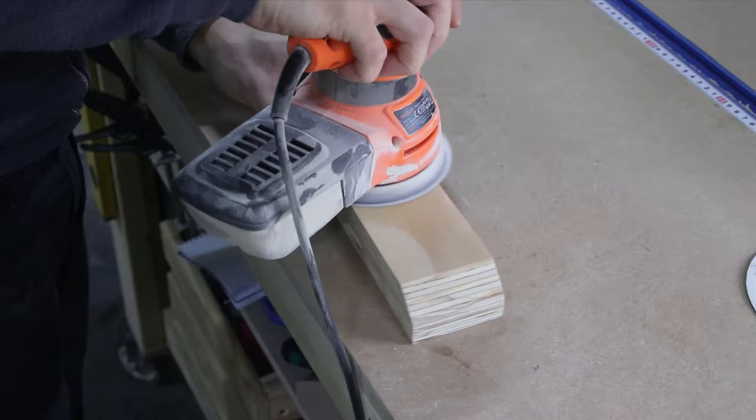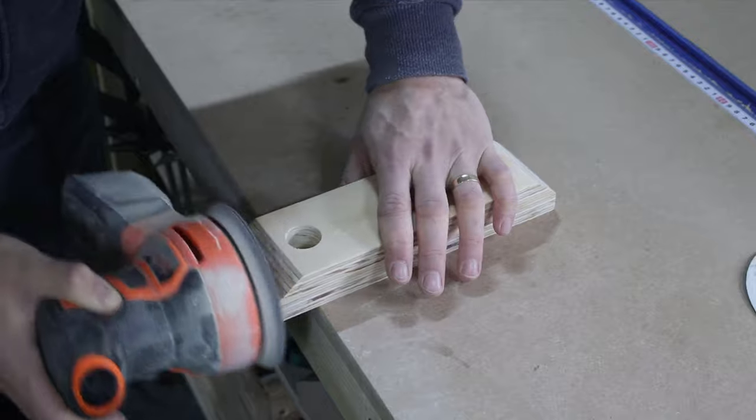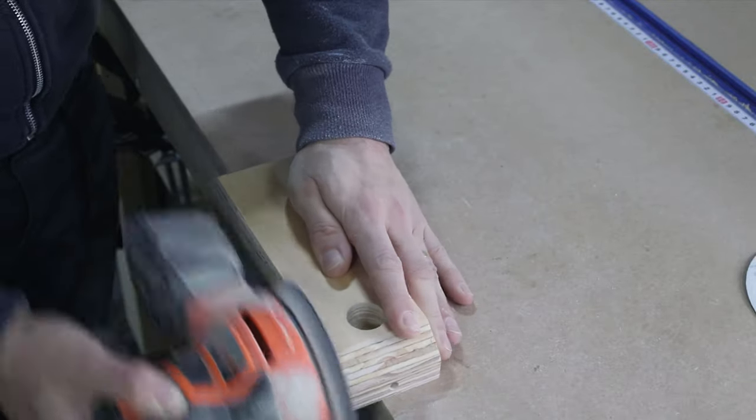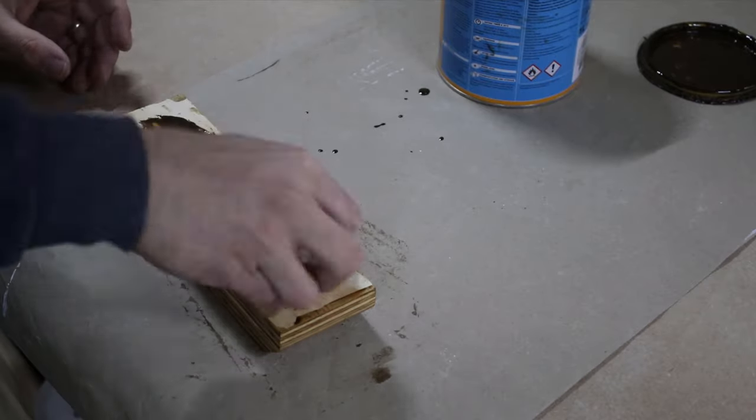I sanded it with 80, 240, 800 and finally 3000 grit sandpaper. Then I applied a coat of African walnut stain to match the industrial look of the pipes.